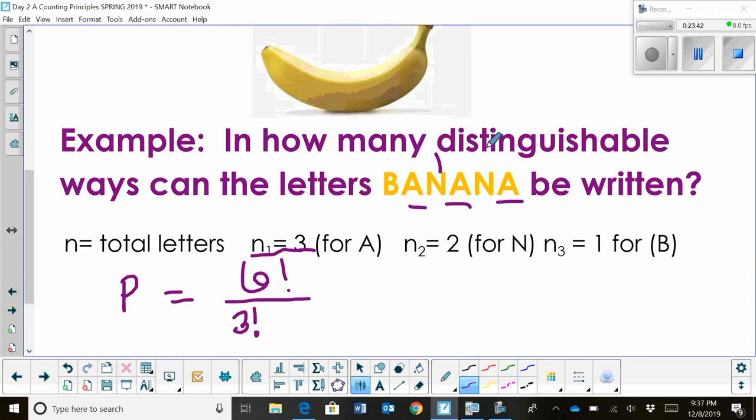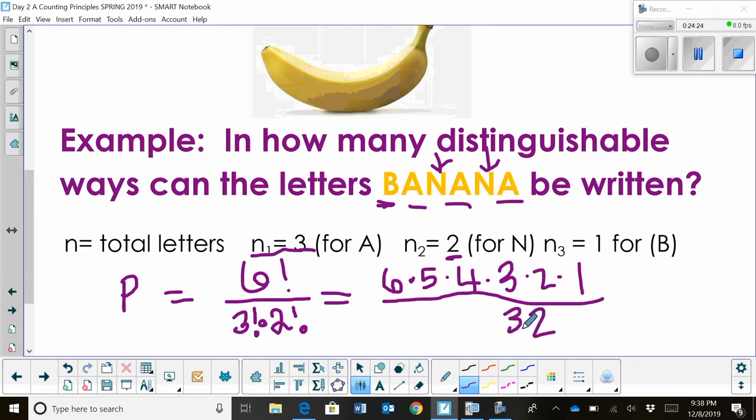So I have to divide by 3 factorial to represent the letter A. Then N, it occurs twice. So I have to divide by 2 factorial because it occurred twice. Now, the B, I don't really have to worry about because it's one letter and it would be 1 factorial. So that's just 1. So I've got to take 6 factorial divided by 3 factorial times 2 factorial. So I'm going to write the entire sequence down. So I've got 6 times 5 times 4 times 3 times 2 times 1. And I'm going to divide that by 3 factorial, which is just 3 times 2 times 1. And I'm going to write it under there because I know those can cancel. Then I have 2 factorial. Well, 2 factorial is 2 times 1. So I'm going to write that one all out.